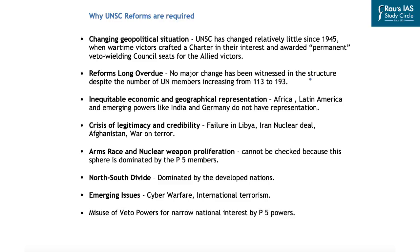Since the UNSC has failed to implement its mandate of maintaining international peace and security, there are talks that this is the right moment for UNSC reforms. From a mains examination perspective, the first reason for UNSC reform is that the geopolitical situation has changed considerably since the Second World War. The UNSC was created by the victors of the Second World War — the allied powers — and can be seen as a discriminatory structure imposed on the global level. Despite a changed geopolitical situation, the UNSC has changed very little, and no major change has been witnessed despite UN membership increasing from initially 113 to presently 193 members.